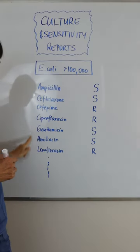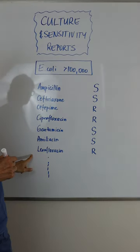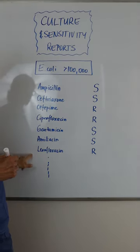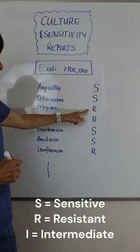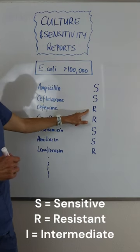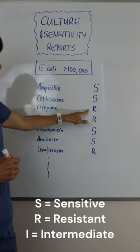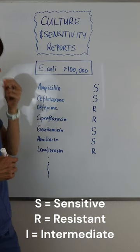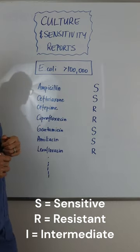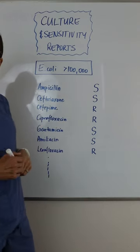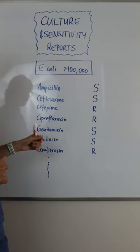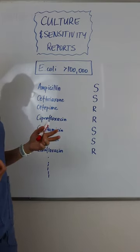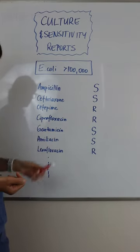And then there'll be a whole list of different antibiotics. And also there will be an S or an R — sometimes there's an I for intermediate. So if the patient was started on an empiric antibiotic, it's important for us to know which one that was.